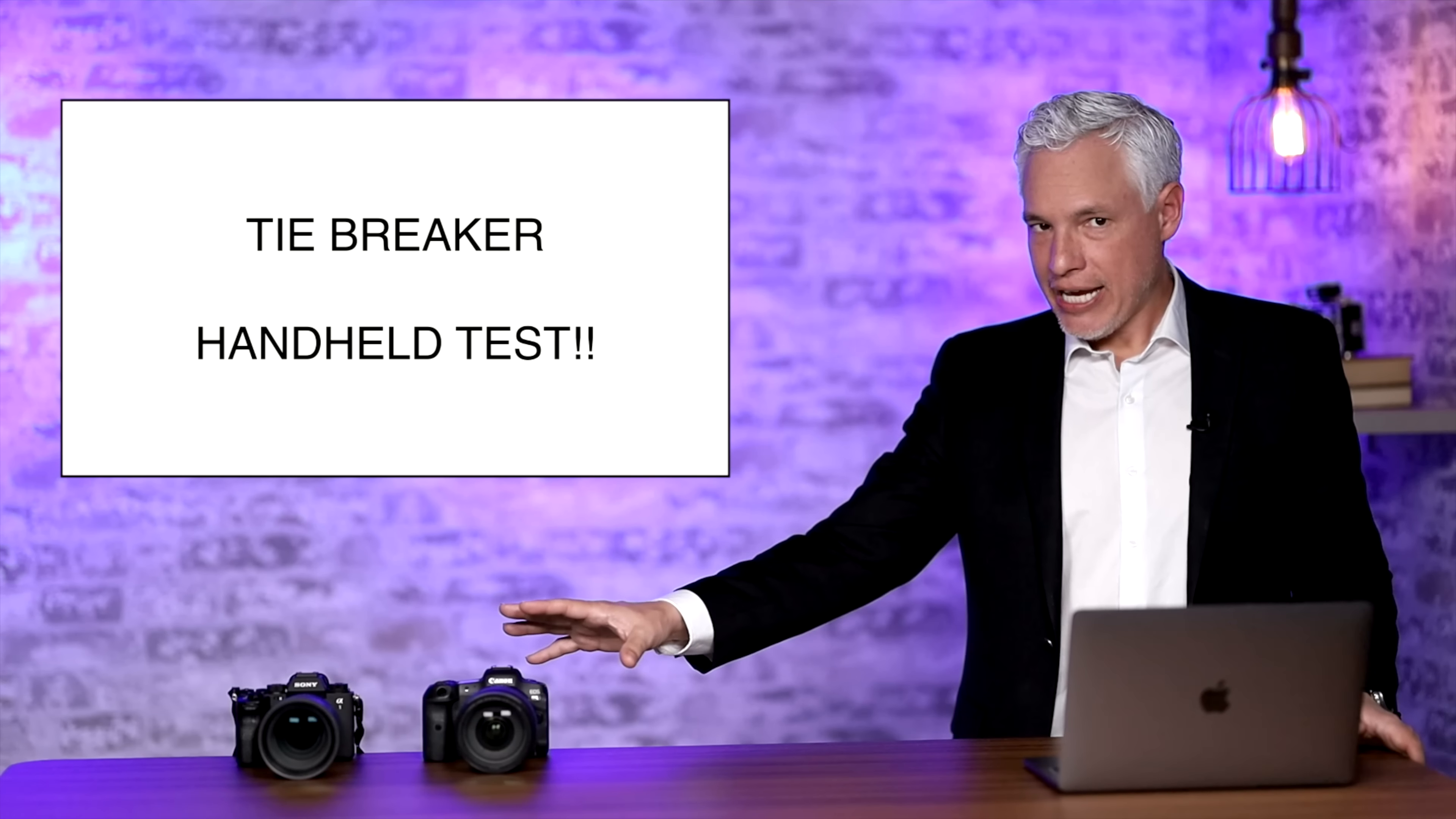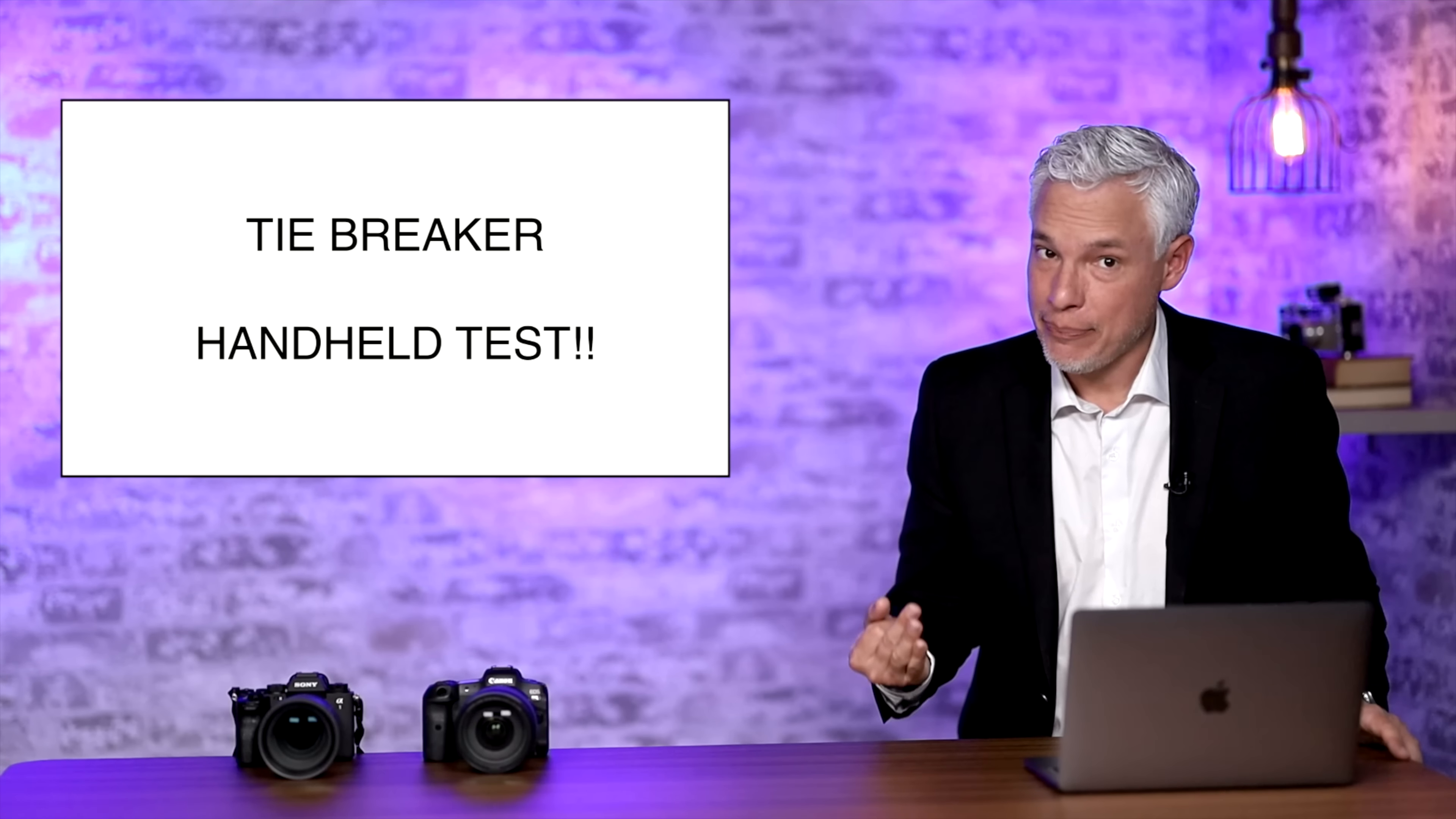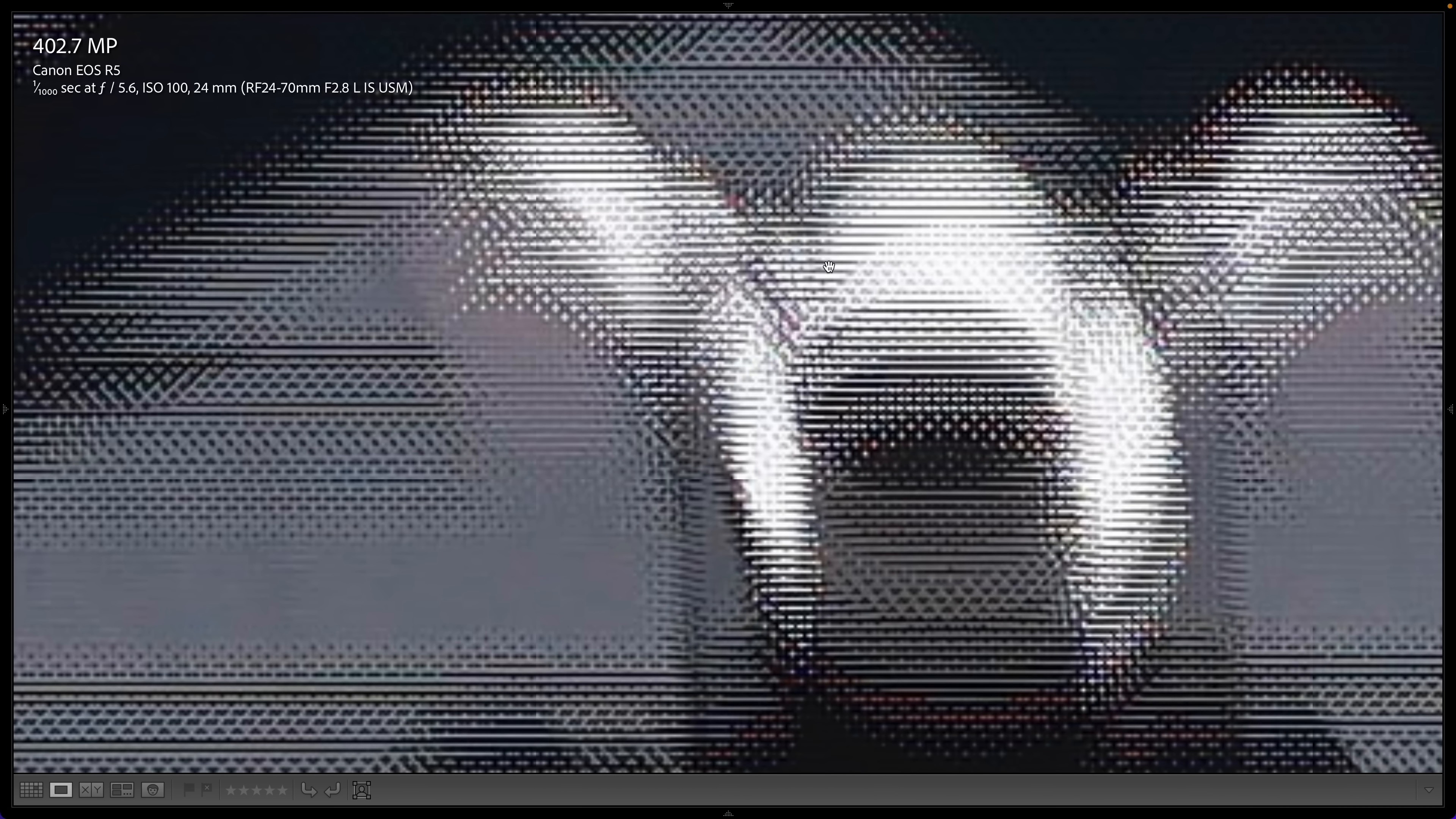So I brought the Canon out to see if I could hand-hold it because we know the stabilization is working across images because it cancels out the movement of my tripod. But would it work hand-held? At 24 millimeters I could usually hand-hold this at a second or maybe even two seconds. But trying over and over again every single shot produced massively shaky unusable results. So this did not settle the tie.